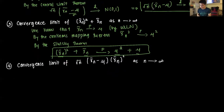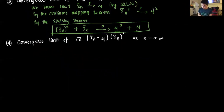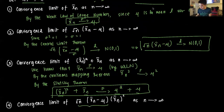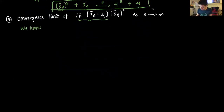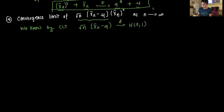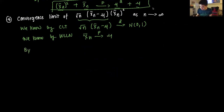We can apply that again for the last problem. We already know from part two, by the CLT, that √n times (x̄ₙ − μ) converges in distribution to N(0,1). And we know by the weak law of large numbers that x̄ₙ converges in probability to μ. Then by the continuous mapping theorem, x̄ₙ² — the squaring function — converges in probability to μ².